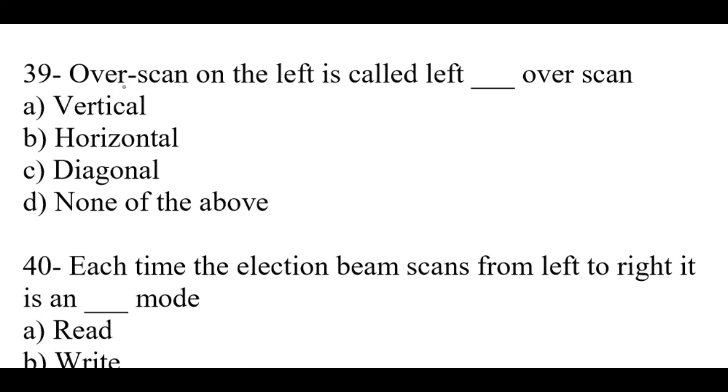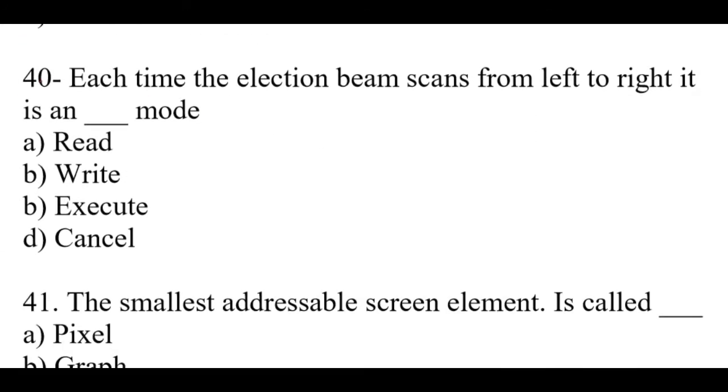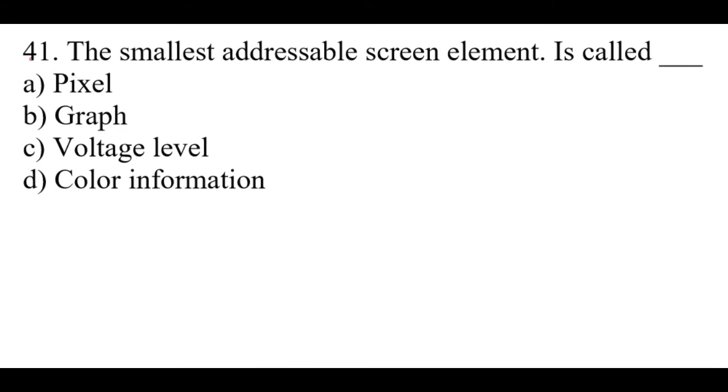Question number 39: Over scan on the left is called left dash over scan. Right option is B, horizontal. Question number 40: Each time the electron beam scans from left to right it is in dash mode. Right option is B, write. Question number 41: The smallest addressable screen element is called dash. Right option is A, pixel.